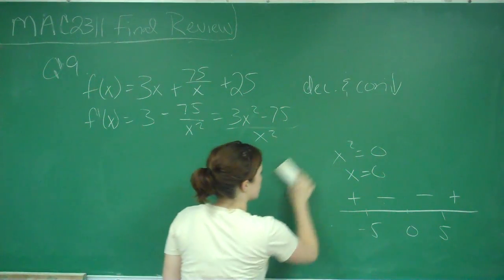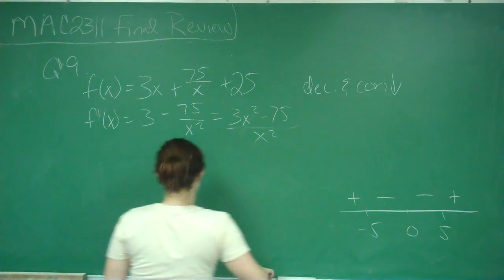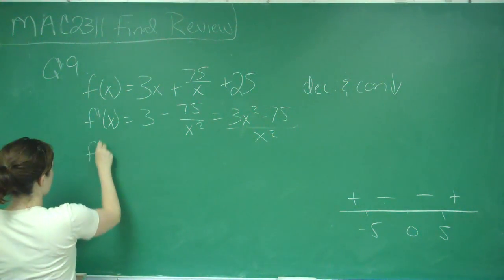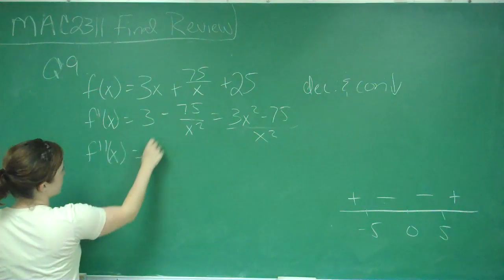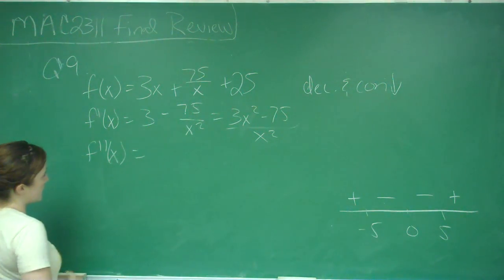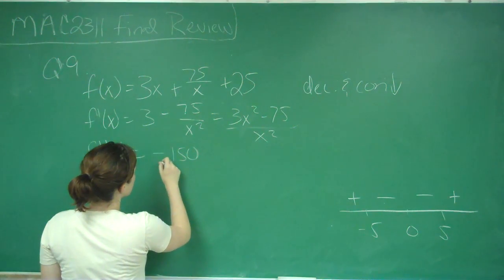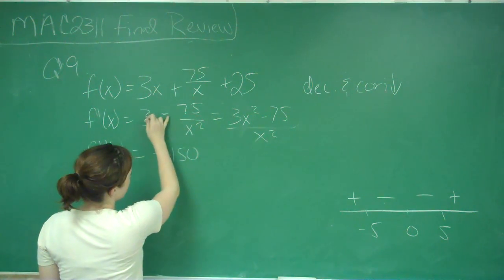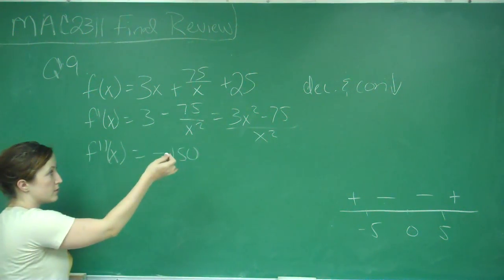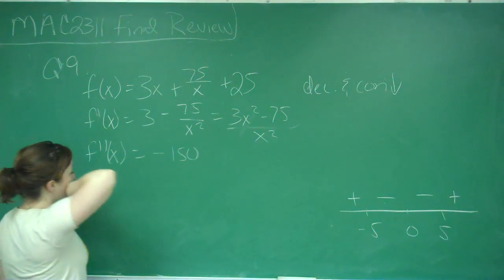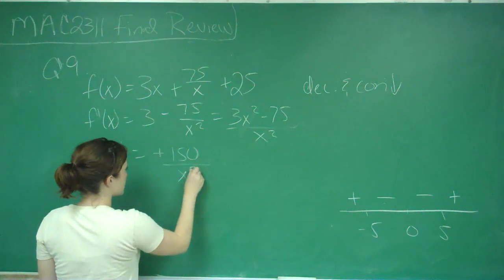Now that we know that, I'm going to go ahead and take my second derivative. I'm going to take my second derivative off of this form, because that will be a little bit easier. I'm taking negative 75x to the negative 2. So we times negative 2 by negative 75, it's going to be positive, and 150 over x cubed.